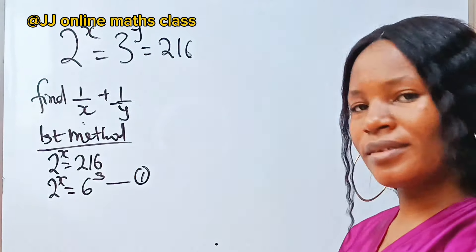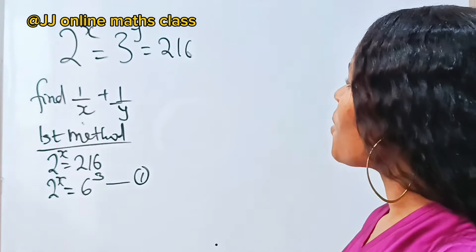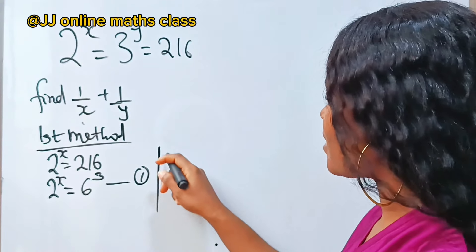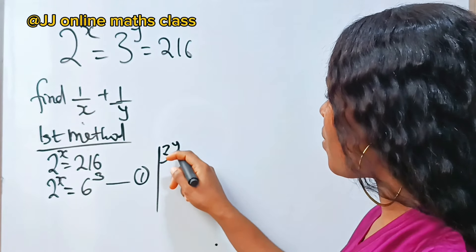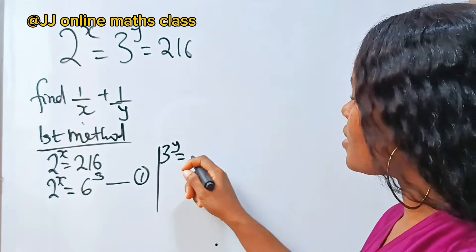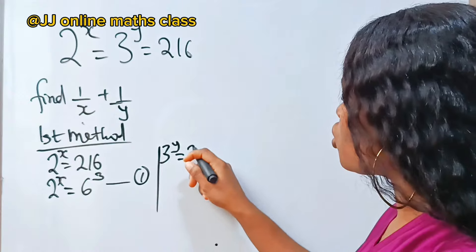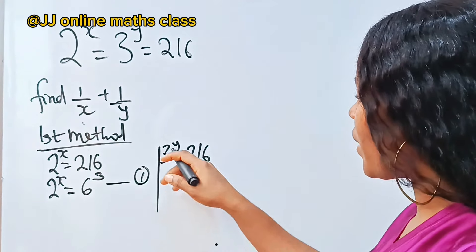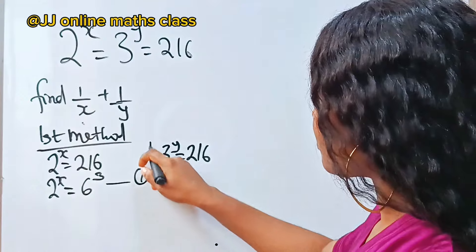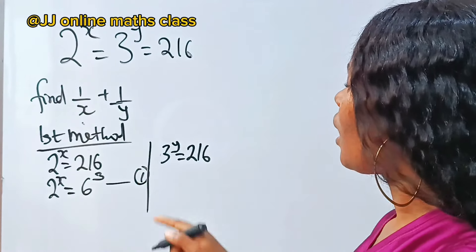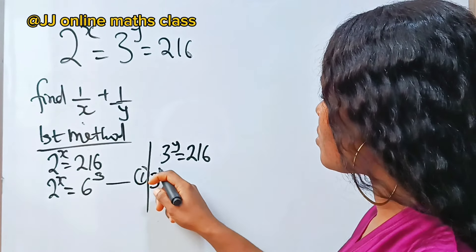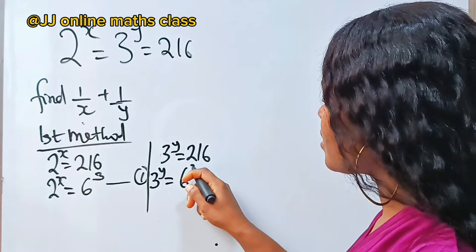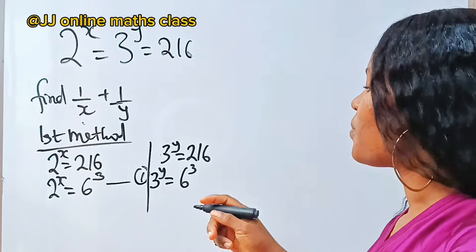Also we have that 3 to the power of y is equal to 216. Similarly, we can say that 3^y is equal to 6 to the power of 3. Let's call this equation two.